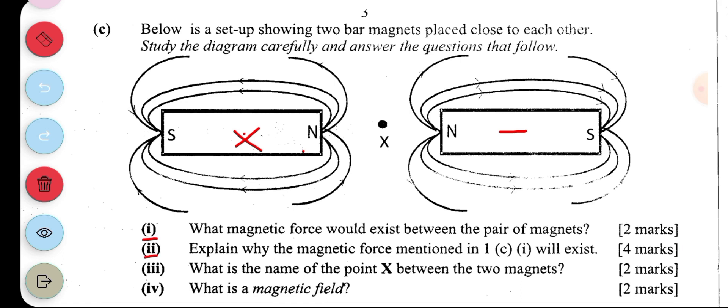In part two, explain why the magnetic force mentioned in one C will exist. This is simply because the poles are like poles and they repel each other when brought together.